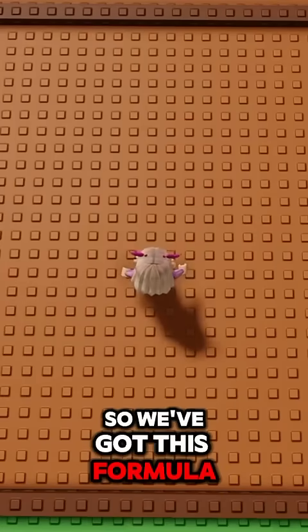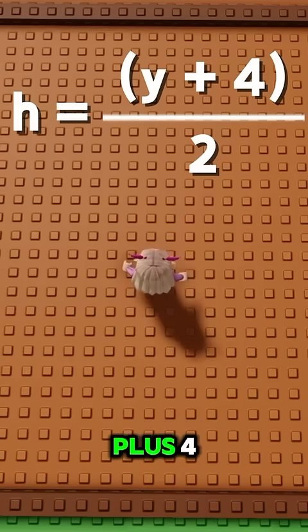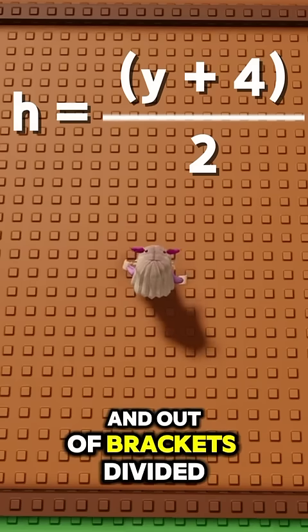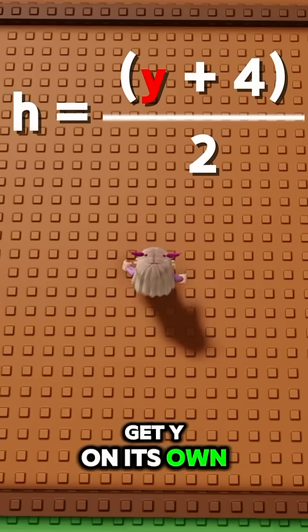We've got this formula: H equals in brackets y plus 4 and out of brackets divided by 2. We want to get y on its own.